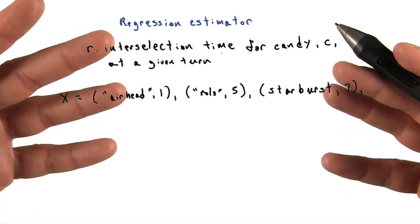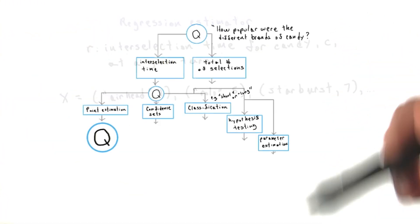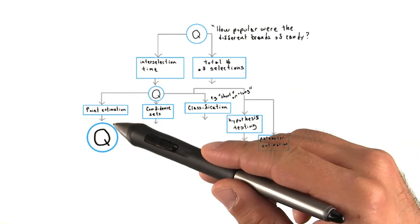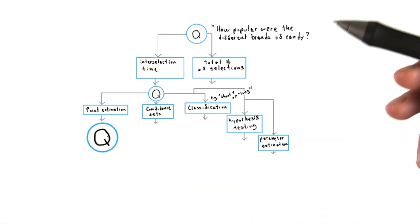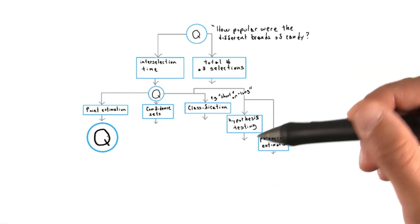Let's consider our next possible paths for analysis. At this stage, really our only options are to proceed with the regression estimator, which means identifying features, or revisiting an earlier step. The next video will proceed with feature selection.